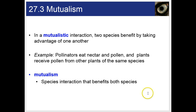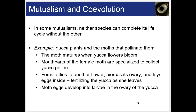It's a win-win situation for both. In some mutualisms, because of co-evolution, neither species can complete its life cycle without the other. For instance, yucca plants and the moths that pollinate them: the moth matures when the yucca flowers bloom, and the mouthparts of the female moth are specialized to collect the yucca pollen. The female flies to another flower, pierces its ovary, and lays eggs inside, fertilizing the yucca as she leaves. The moth eggs then develop into larvae in the ovary of the yucca.